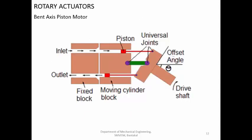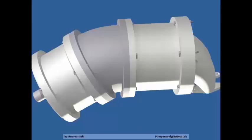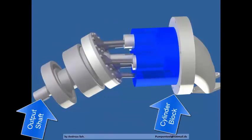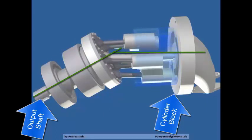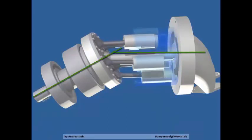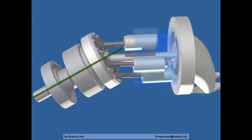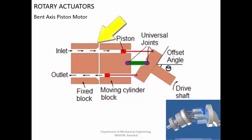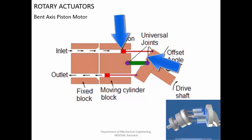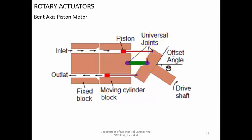The next one is the bent axis piston motor. You are having the pistons reciprocating inside the cylinder block. The cylinder block along with the output shaft will be rotating around their axis. You are having the drive shaft which is at an angle — this is the axis of the cylinder block or axis of the pistons, and this is the axis of the drive shaft. The surface of the drive shaft is the surface on which the pistons are able to slide, thereby creating the rotary movement. The power is transmitted because there is a universal joint which is strong and can supply torque from the cylinder block to the output shaft.